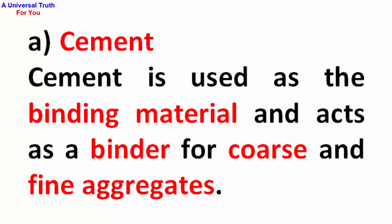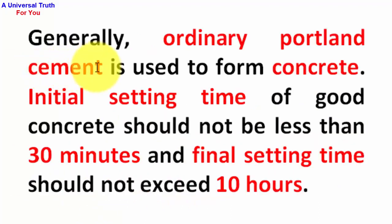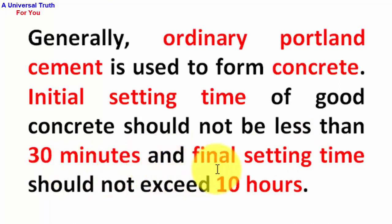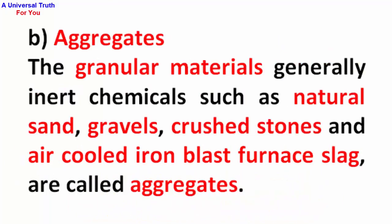A) Cement: Cement is used as the binding material and acts as a binder for coarse and fine aggregates. Generally, ordinary Portland cement is used to form concrete. The initial setting time of good concrete should not be less than 30 minutes, and the final setting time should not exceed 10 hours.